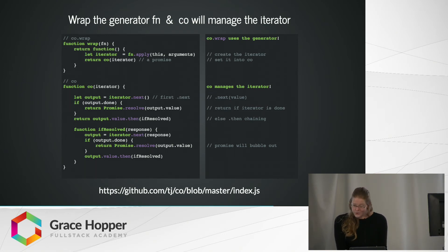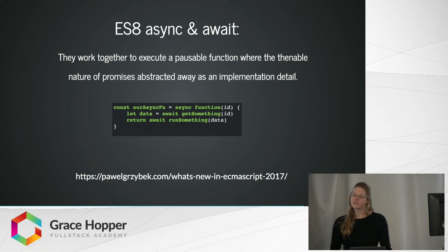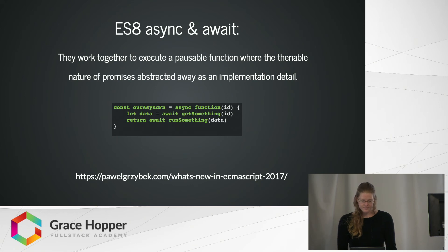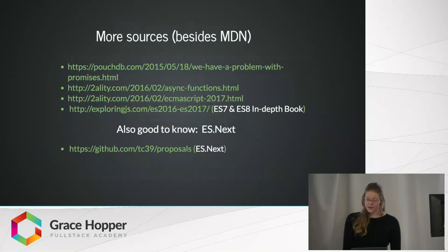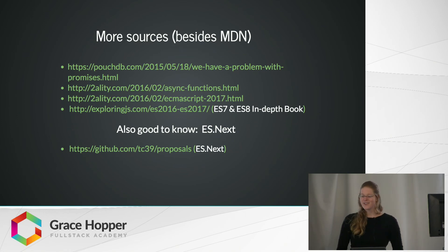So what do co.wrap and generators teach us about async and await? In essence, async and await work together to execute a seemingly synchronous function where the thenable nature of promises are abstracted away. And that concludes the body of my tech talk. Here are my sources and a couple more things I'd like to leave you with. Exploring.js has a great free ebook which covers anything you could want to know about ES7 and ES8. And there's one more thing that's really good to know about — that's ESnext. It is a collection of all proposals that might be included in the next ECMAScript, and those proposals are just a click away on GitHub. I suggest that you take one at random and get your feet wet with ESnext.